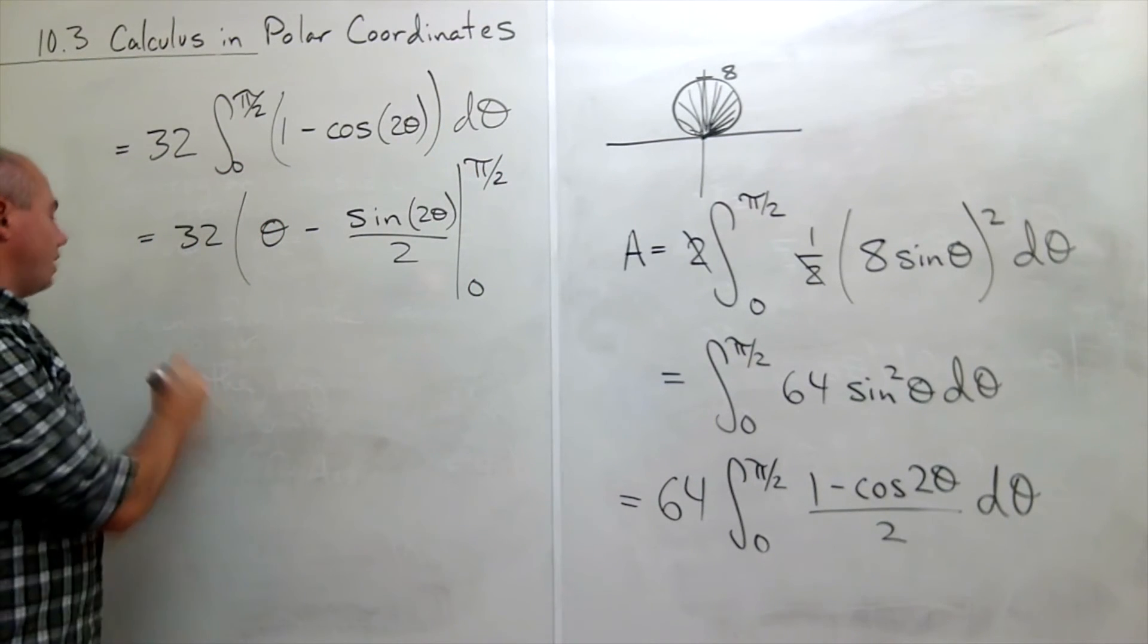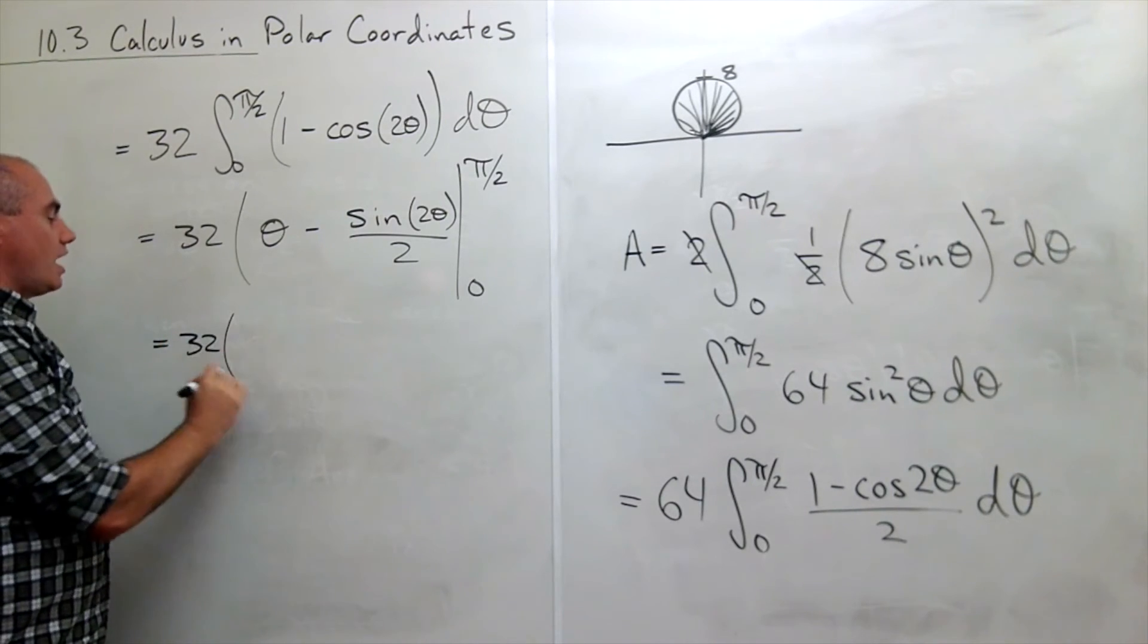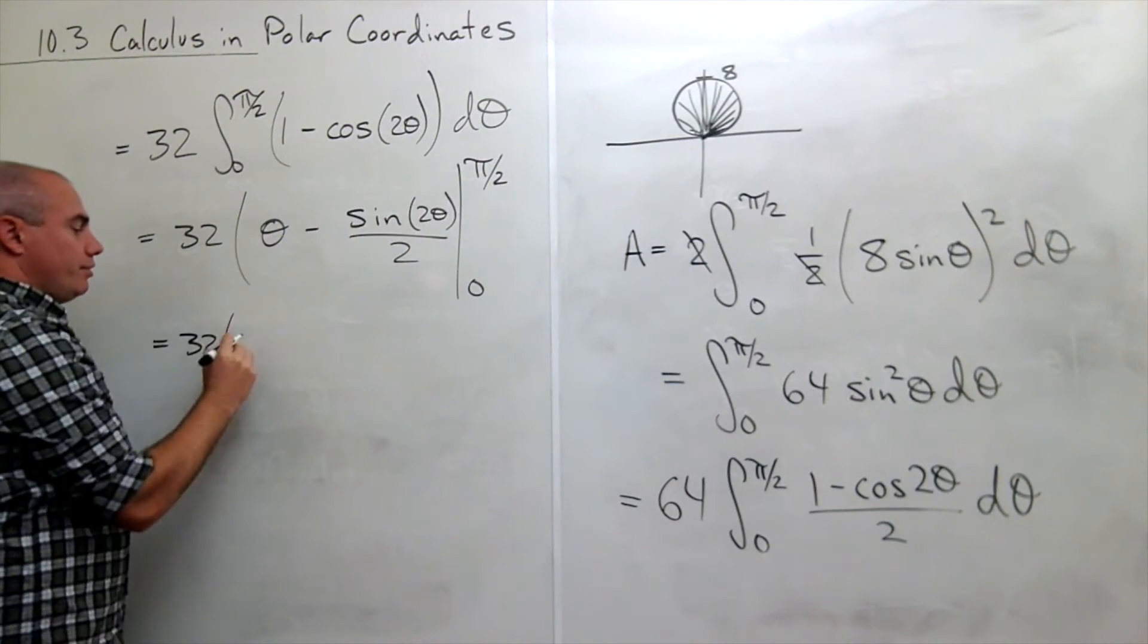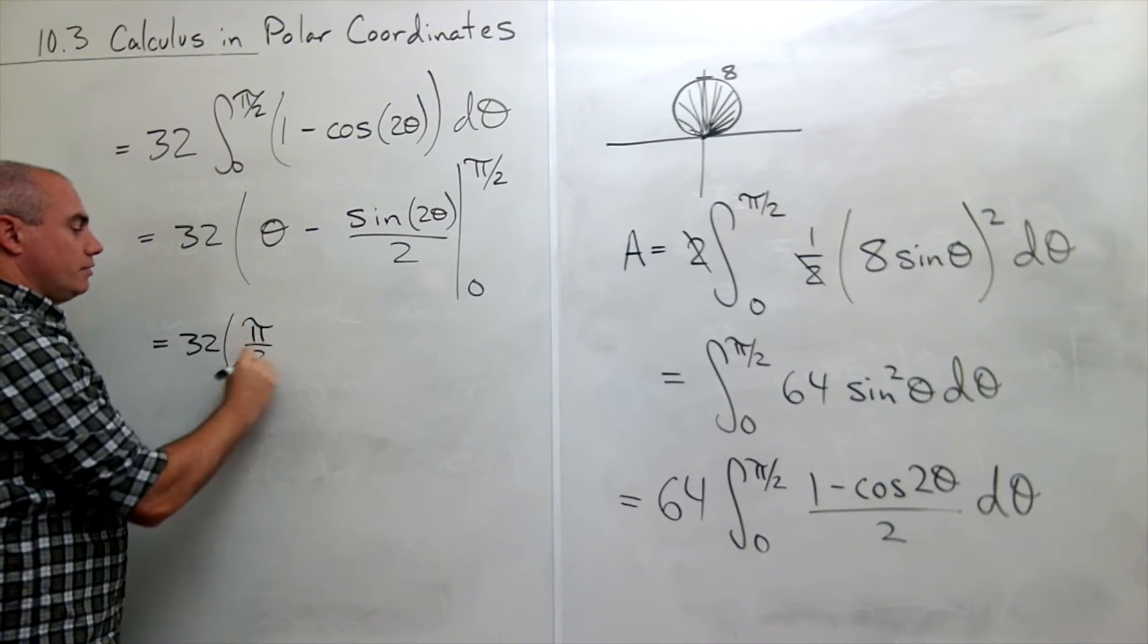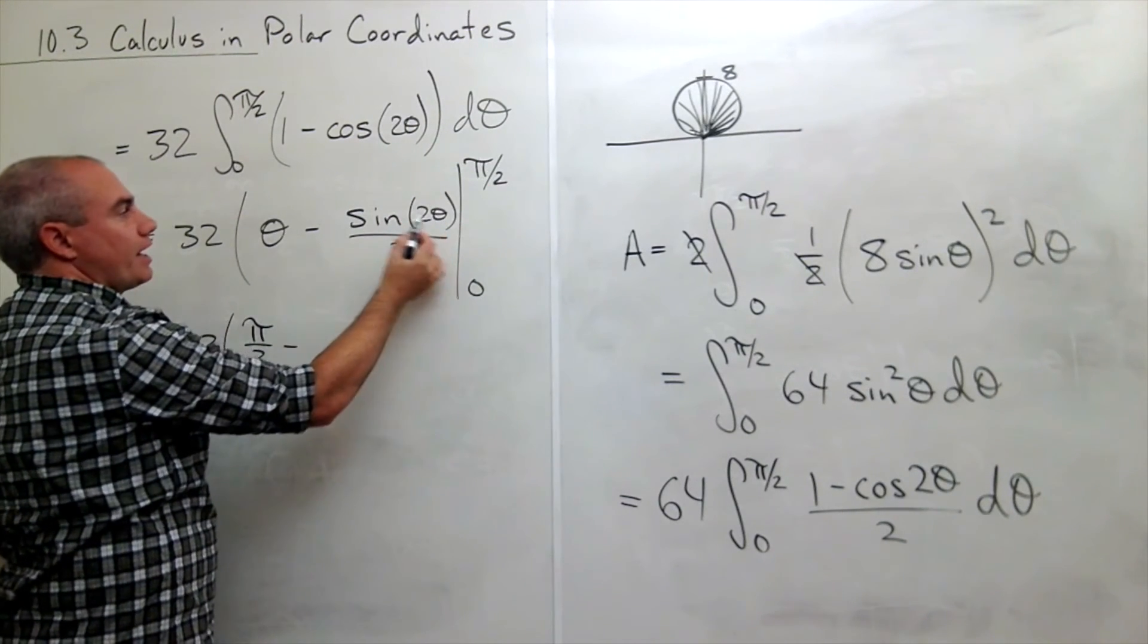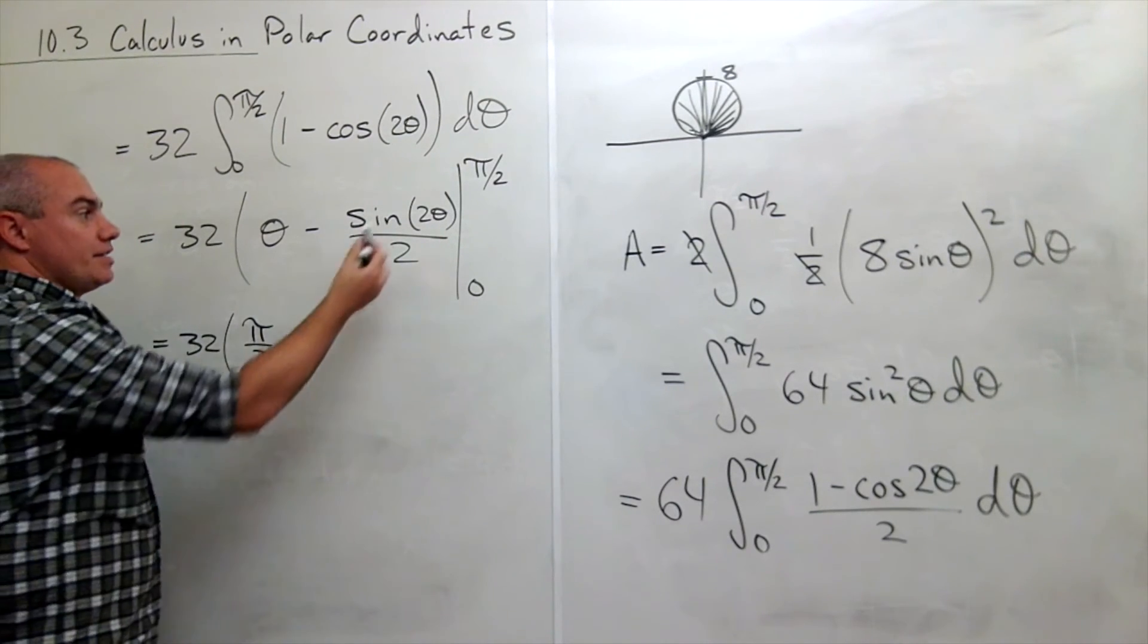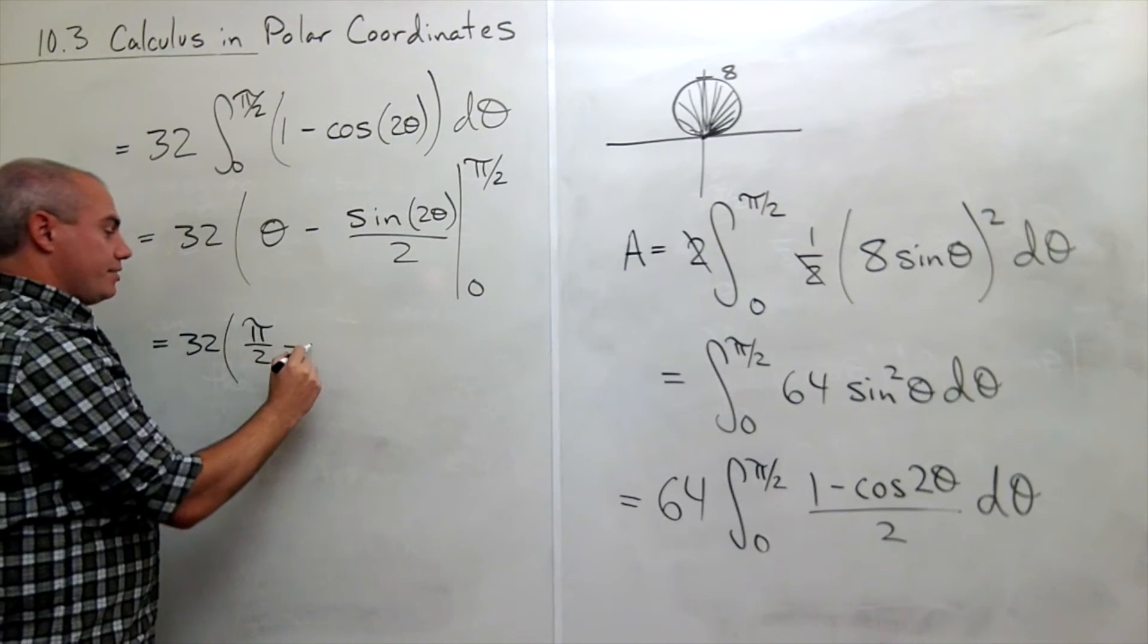Okay, now let's plug in our pi over 2. I get 32 times, plug in pi over 2 for theta, I get pi over 2 minus, plug in pi over 2 for theta and I get sine of pi. Sine of pi is 0 and 0 divided by 2 is still 0.